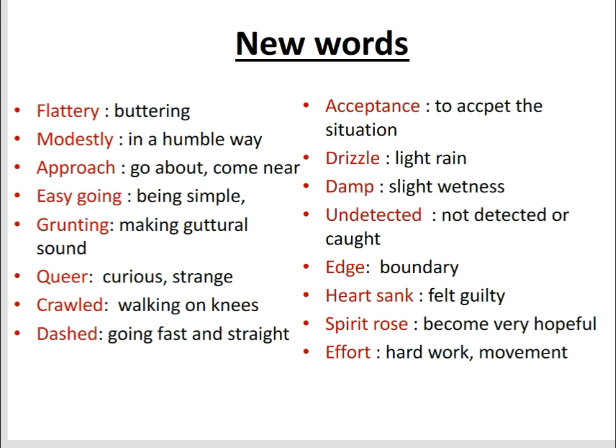Queer means curious or strange. Crawled — like how children crawl on the floor. Dashed — the thief dashed straight toward the platform, not going to the ticket counter but running directly. Acceptance means to accept a situation. Drizzle means light rain. Damp means a little wet — the notes were damp, slightly wet. Undetected means not being caught. Heart sank means feeling suddenly guilty, like you've been caught. Spirits rose means becoming very hopeful — a little hope sparked.